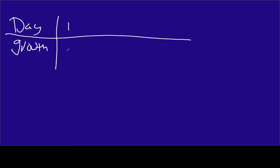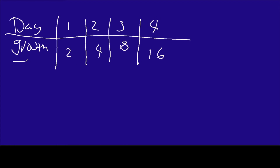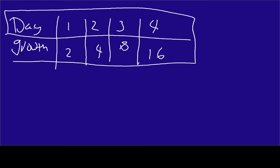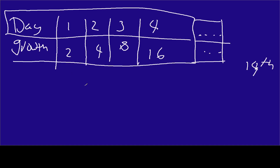When we're talking about an explicit sequence, let me start with an example. Let's say we have two variables and we're looking at the growth of bacteria over several days. So on day one there are 2 bacteria, on day two you've got 4, day three you've got 8, and day four you've got 16. These ellipses mean this goes on forever, and our question is: what will it be on the 14th day?